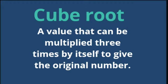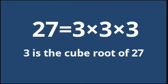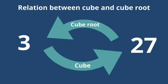On the other side, a value that can be multiplied 3 times by itself to give the original number is called the cube root of that number. When we find factors of 27, these are 3 times 3 times 3. So 3 is the cube root of 27.